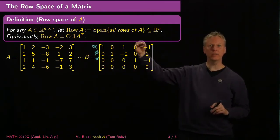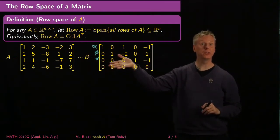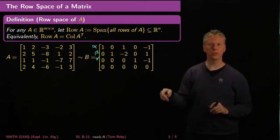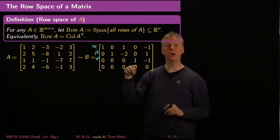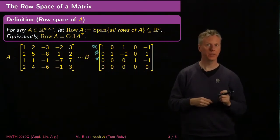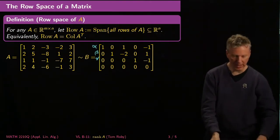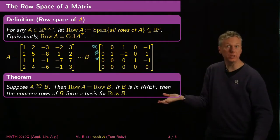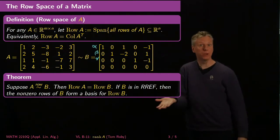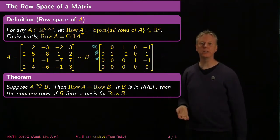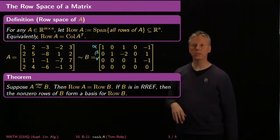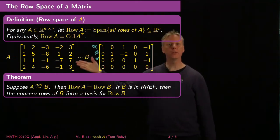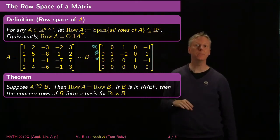So these three vectors — the top three non-zero vectors — are a basis for the row space of both A and B. That's the key result, and I've just sketched the proof using this example: if two matrices are row equivalent, then their row spaces have to be equal, because every new vector you create during row reduction is a linear combination of the ones you already have.